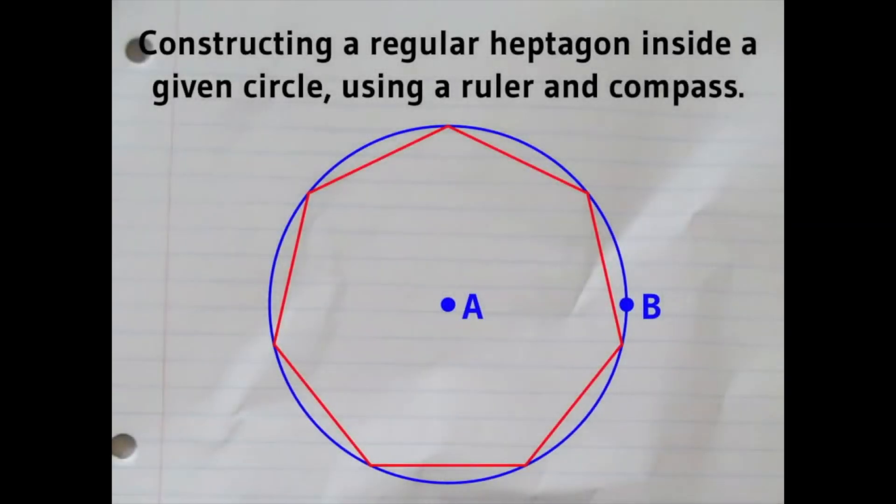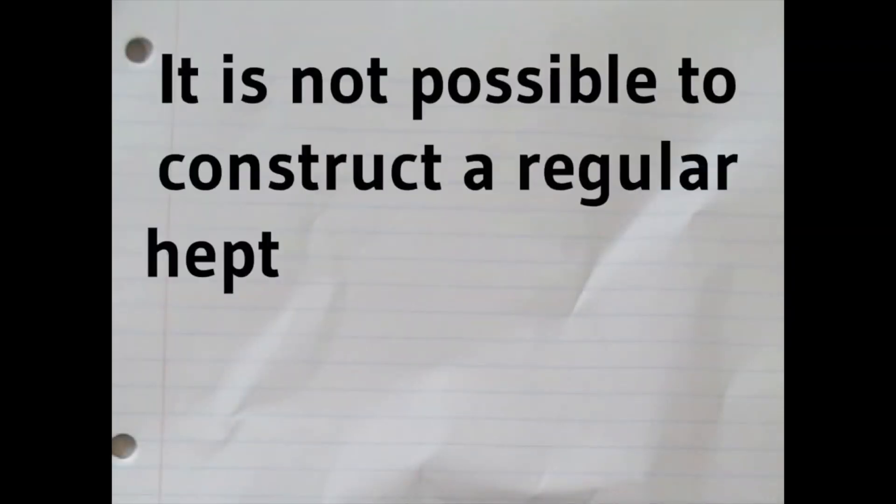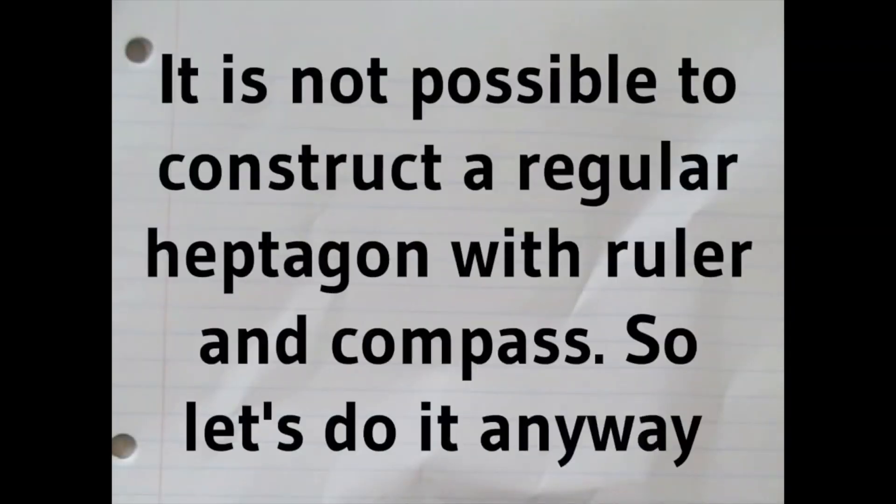In this video, I want to show you how to construct a regular heptagon or seven-sided figure using a ruler and a compass. This actually can't be done, but you can get a shape that's so close to a regular heptagon that no one could tell the difference.